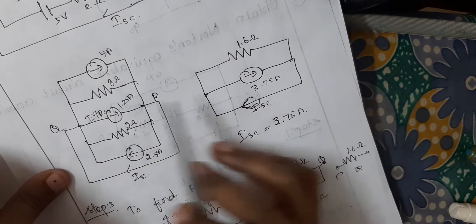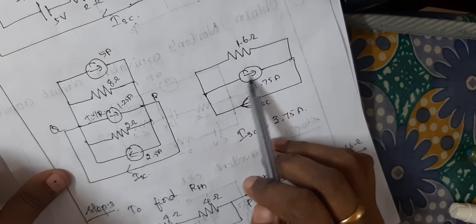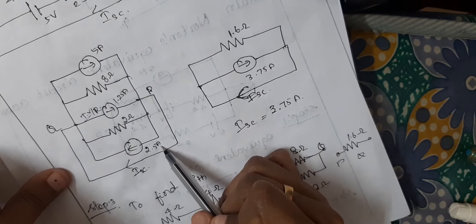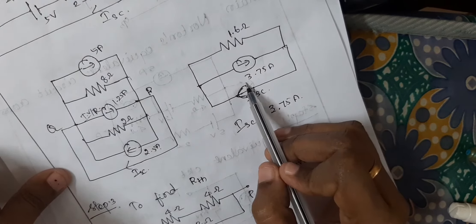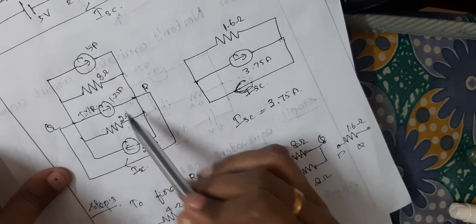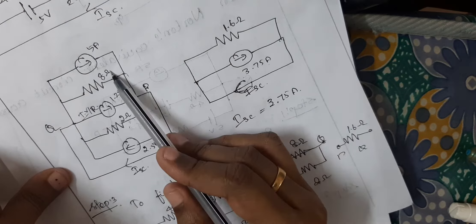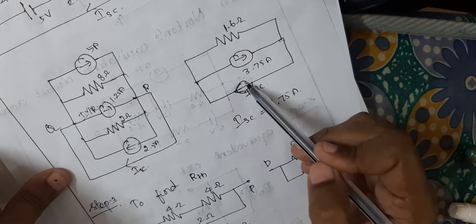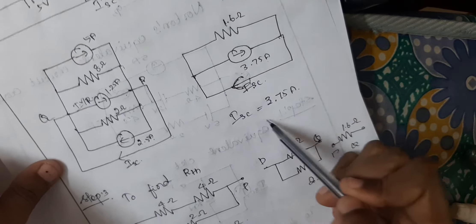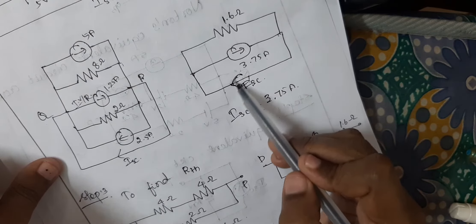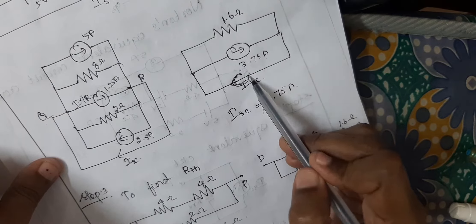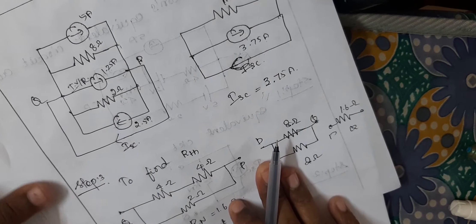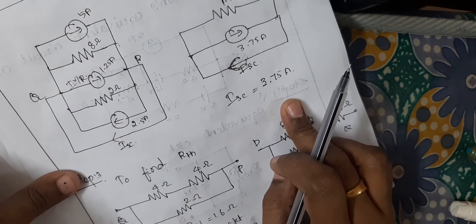The direction is this direction. The other direction is 2.5 in the opposite direction. So 6.25 minus 2.5, the answer is 3.75. And the resistors — these two resistors are parallel: 8 times 2 divided by 8 plus 2, that is 1.6 Ohm. This is the short circuit current, so the short circuit current value is 3.75.